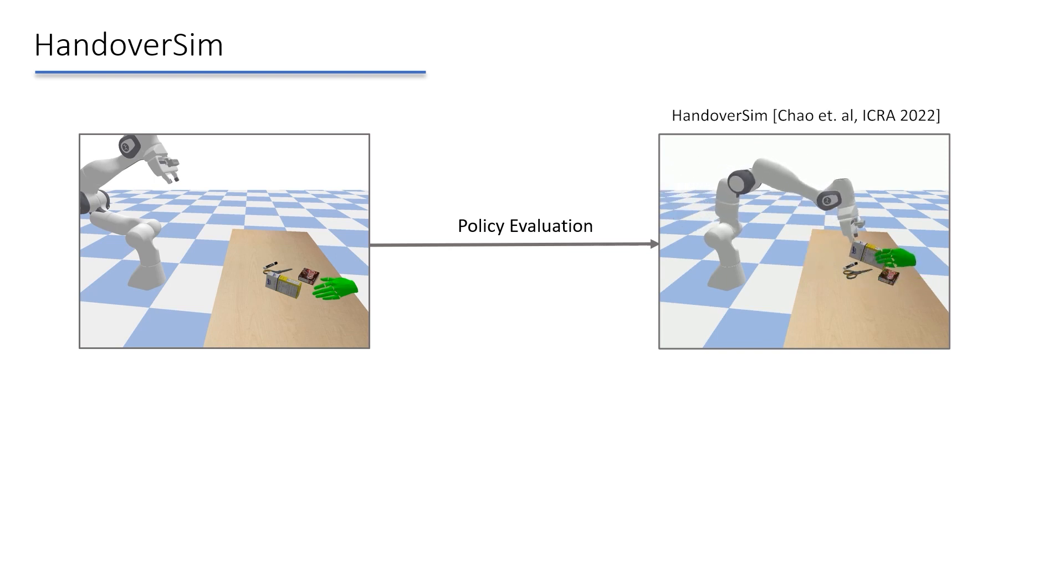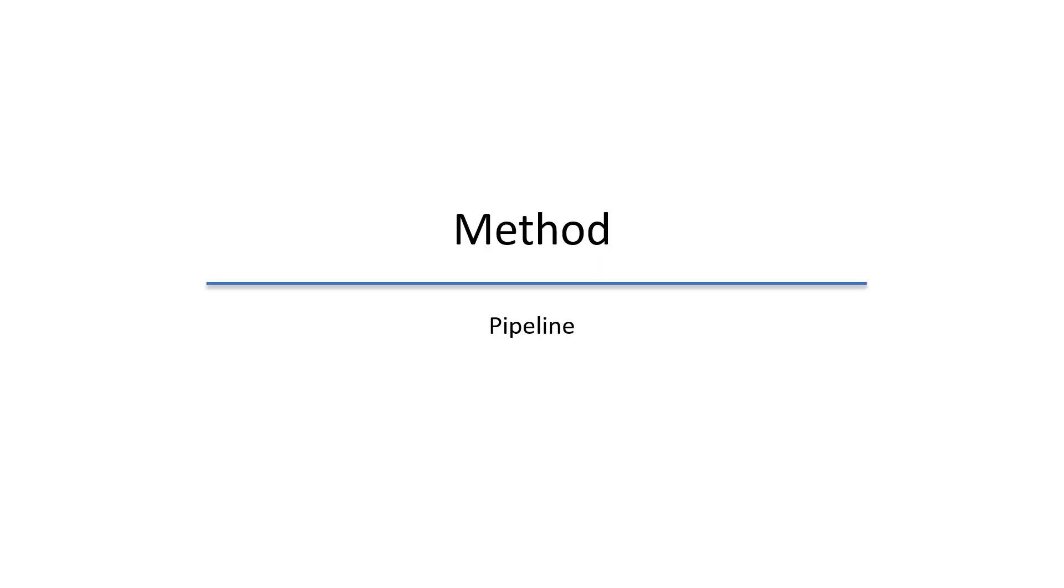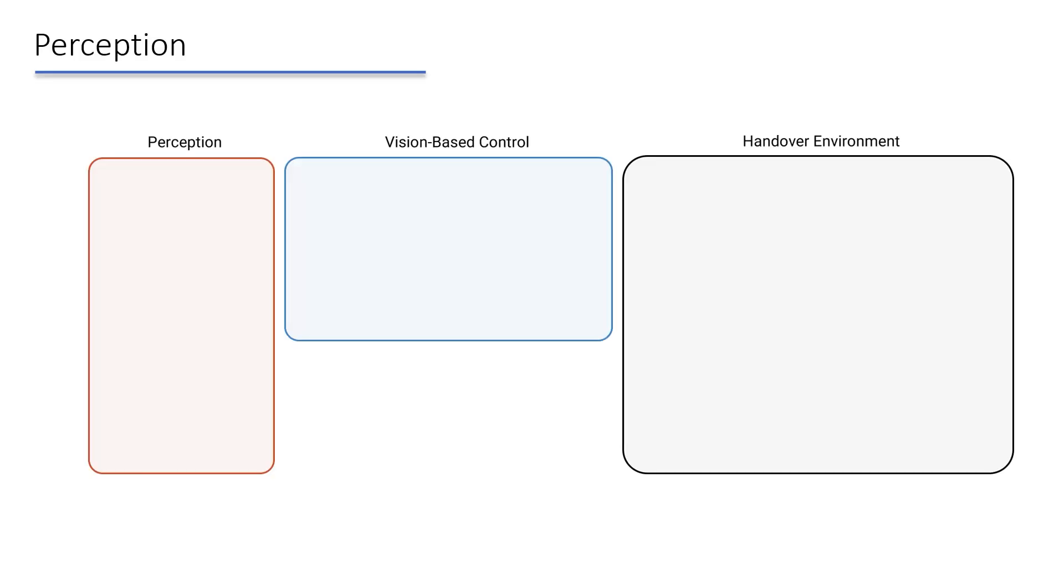In this paper, we leverage this environment to train handover policies by allowing the robot to interact with a human in the loop. Our overall pipeline consists of three main modules: perception, vision-based control, and the handover environment.